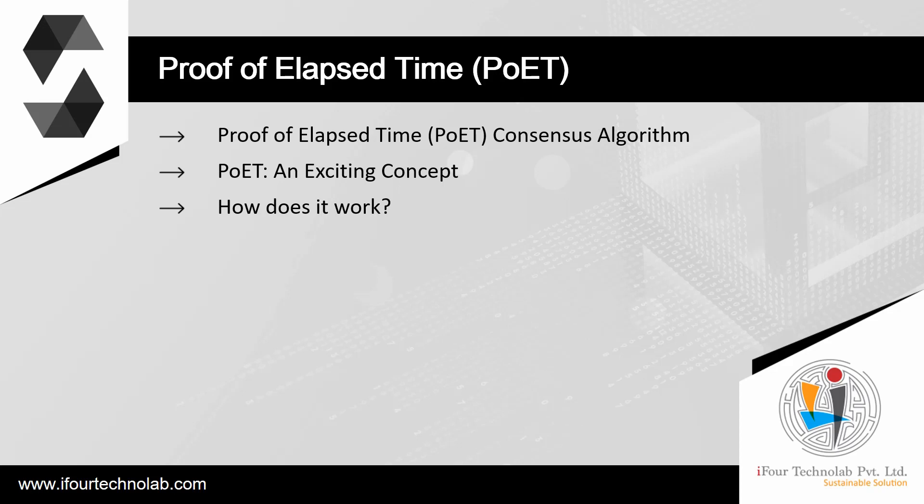Proof of elapsed time is a component of the Hyperledger Sawtooth, a blockchain platform that offers the base for the development of distributed ledger projects. Its outstanding features — power efficiency and compatibility with most computers — are likely to contribute significantly to the mass adoption of this consensus algorithm.